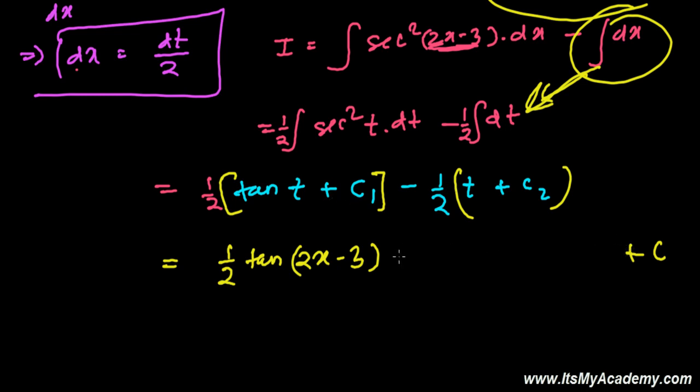So next one is minus half, minus half t and what's t, t is 2x minus 3, 2x minus 3. And so our answer is going to be half tan 2x minus 3, and when this half will multiply this 2x you'll get x, and this minus half will multiply this minus 3 so you'll get 3 by 2.